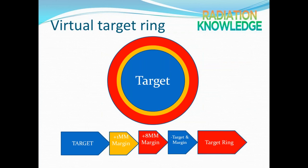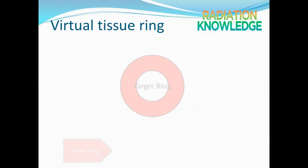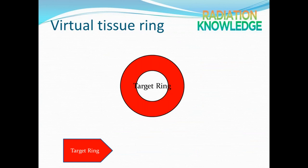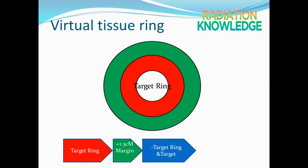Outside the target ring, we also create a virtual tissue ring with 1.5 cm margins, similar to the target rings. We subtract the target rings, targets, and margins to get the tissue ring — shown in green. Both the target rings and the tissue ring are used to control the dose fall-off, ensuring the target dose drops rapidly outside the target.